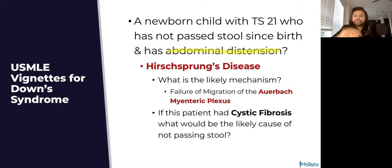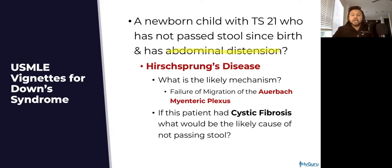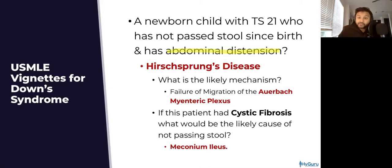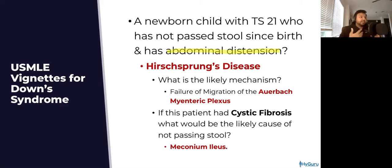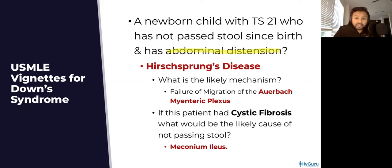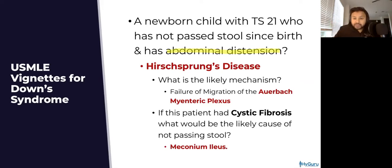Same newborn baby, but rather than Down syndrome they have cystic fibrosis, and now they can't pass the first stool. With cystic fibrosis and failure to pass meconium, you associate meconium ileus. I want you to recognize that failure to pass meconium has three major differentials: A — an anatomic defect like anal atresia; B — a lack of Auerbach's myenteric plexus, related to Hirschsprung's disease; or C — a thick mucus plug at the terminal ileum-cecal junction, characteristic of meconium ileus.